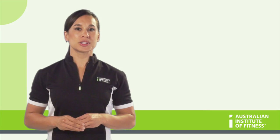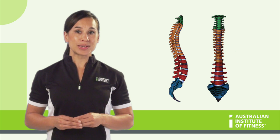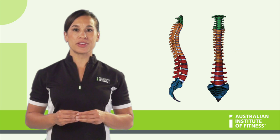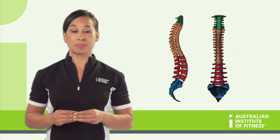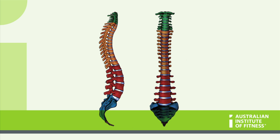The vertebral column, or your spine, is an S-shaped structure that contains 26 vertebrae, all of which are stacked on top of each other like building blocks. The unique S-shaped curve gives the spine its strength and ability to move. When talking about the spine and its individual vertebrae, we make reference to its different sections. Let's explore that now.